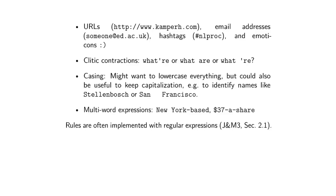Let's look at a few more examples: URLs, email addresses, hashtags, emoticons. Cliticized contractions are quite tricky because you've got 'what're' or 'what are' or whatever. The question is, should I expand it or write it as two words? Casing is one of those examples where maybe I can remove all capital letters and just lowercase everything, but then I won't know that something like Stellenbosch or San Francisco is an entity. And then there are multi-word expressions like 'New York-based' — maybe I should remove the hyphen. There are a ton of these things that you need to make decisions on.